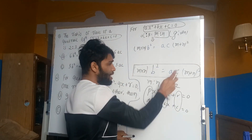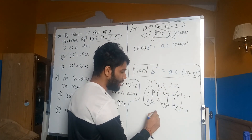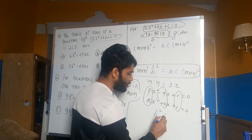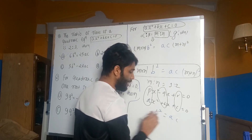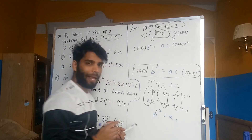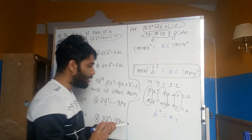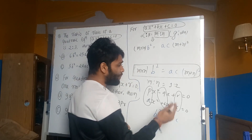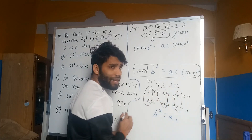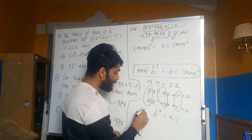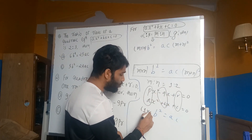We have b² equals AC. Multiplying — this is the ratio of 1 into 2.